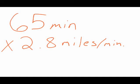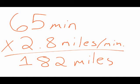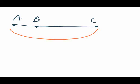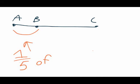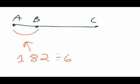65 minutes times 2.8 miles per minute equals 182 miles. So the total distance from A to C is 182 miles. We need to find out the distance between A and B. And since the distance between A and B is exactly one-fifth of B to C, the distance between A and B is 182 divided by 6, or 30 and one-third.